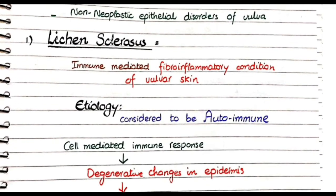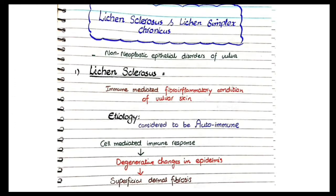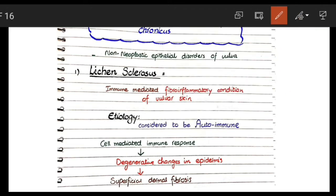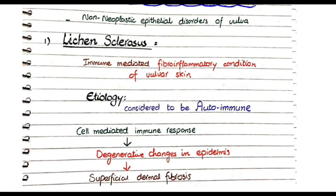Lichen sclerosis is defined as an immune-mediated fibroinflammatory condition of the vulva skin. It is immune-mediated, meaning cells of immunity arrive at the vulva and induce a fibroinflammatory state. These lymphocytes damage the skin of the vulva, resulting in inflammation, and this long-term inflammation can develop into fibrous tissue.